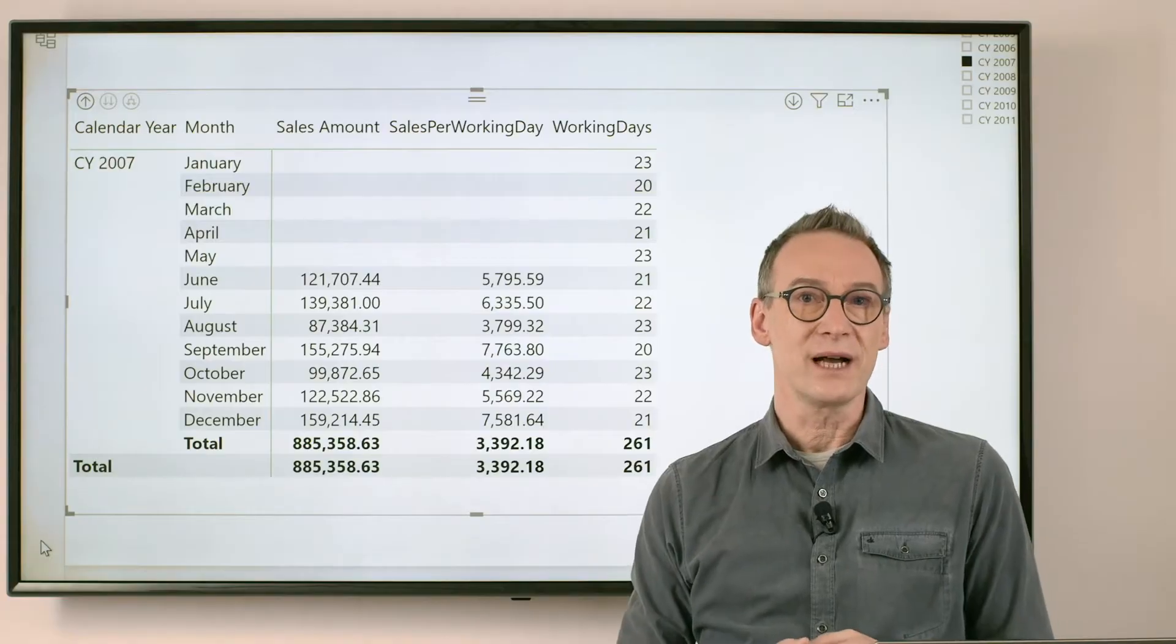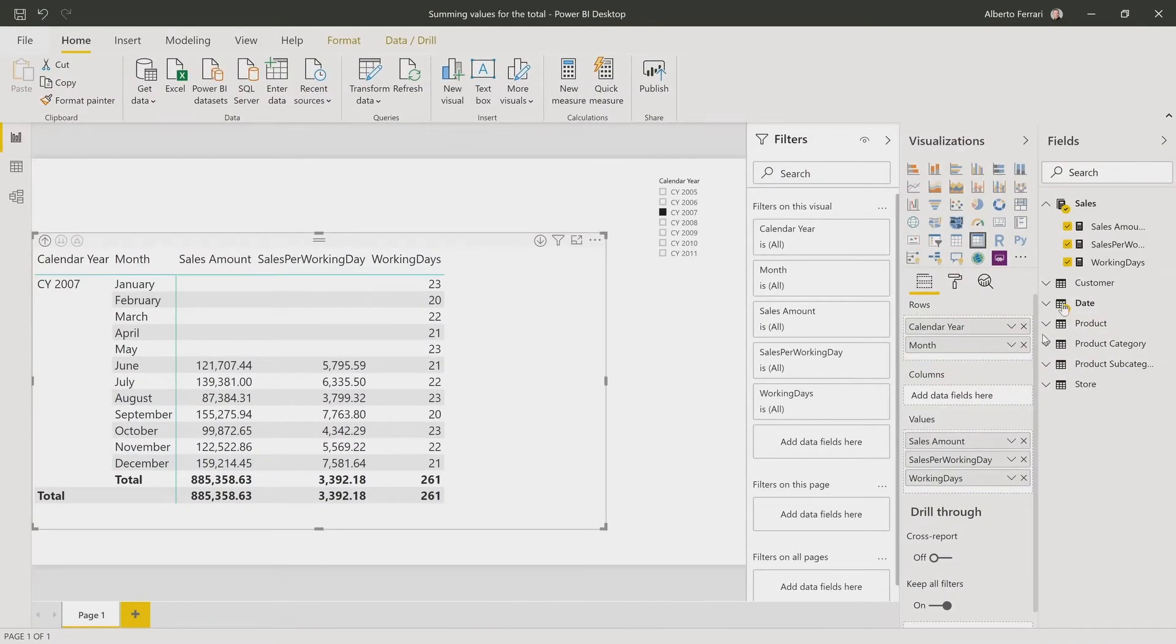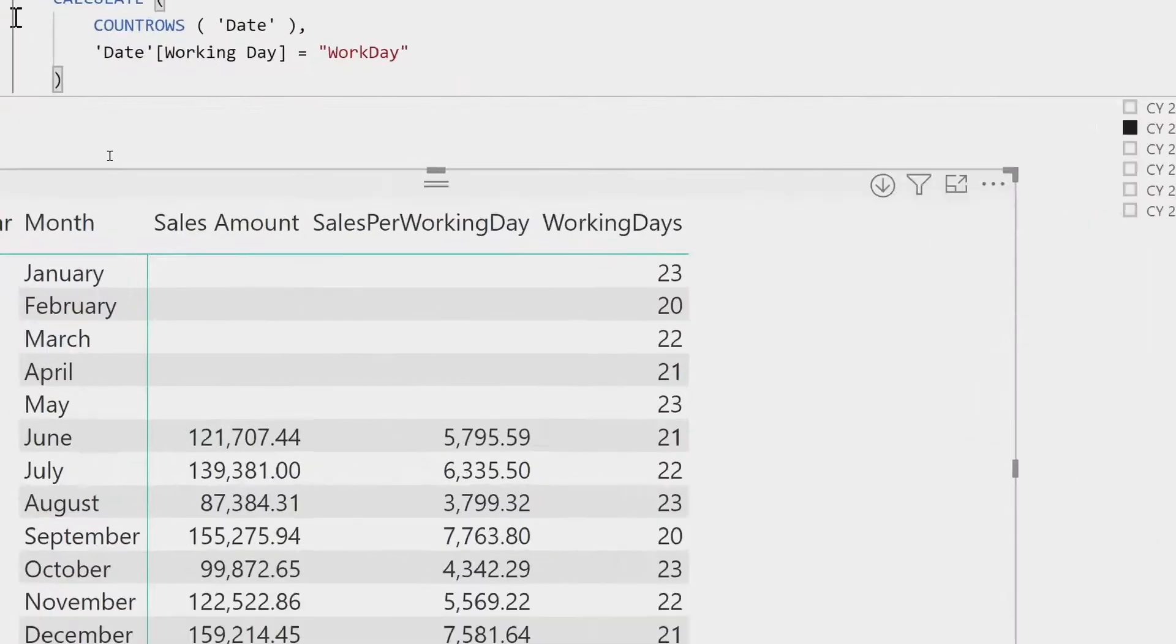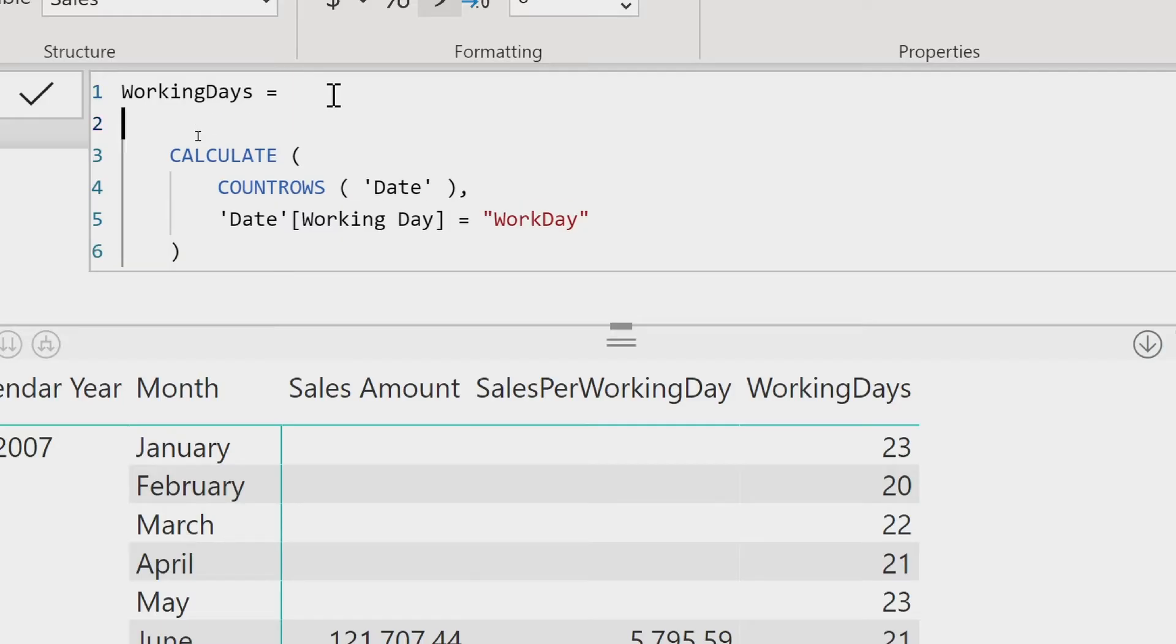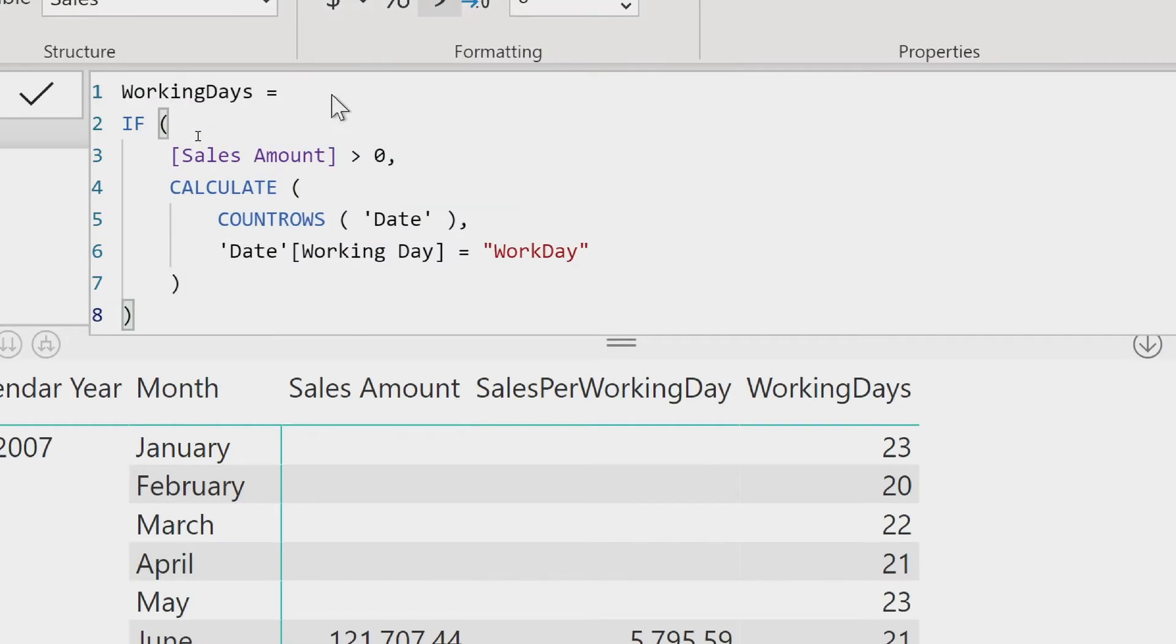Now, you can hide this value in an easy way, because if I want to remove working days from the report, an IF statement is more than enough. I can just use an IF statement that checks if sales amount is greater than zero, then I compute the number of working days. Otherwise, I blank it out.